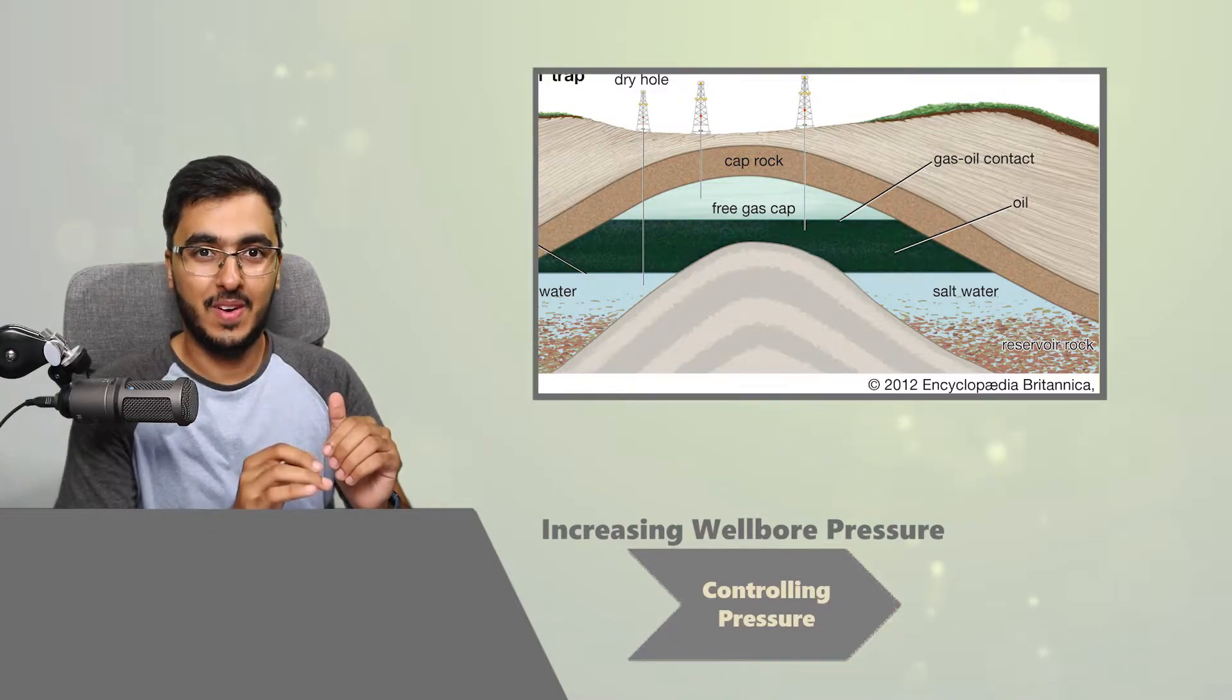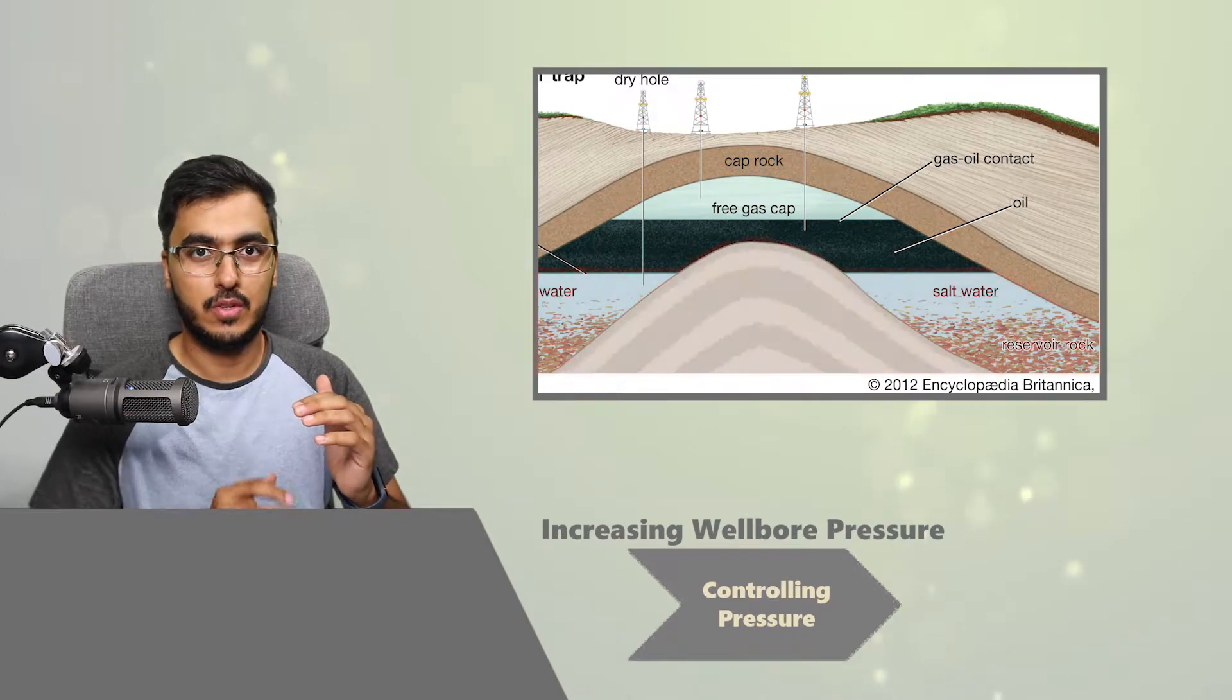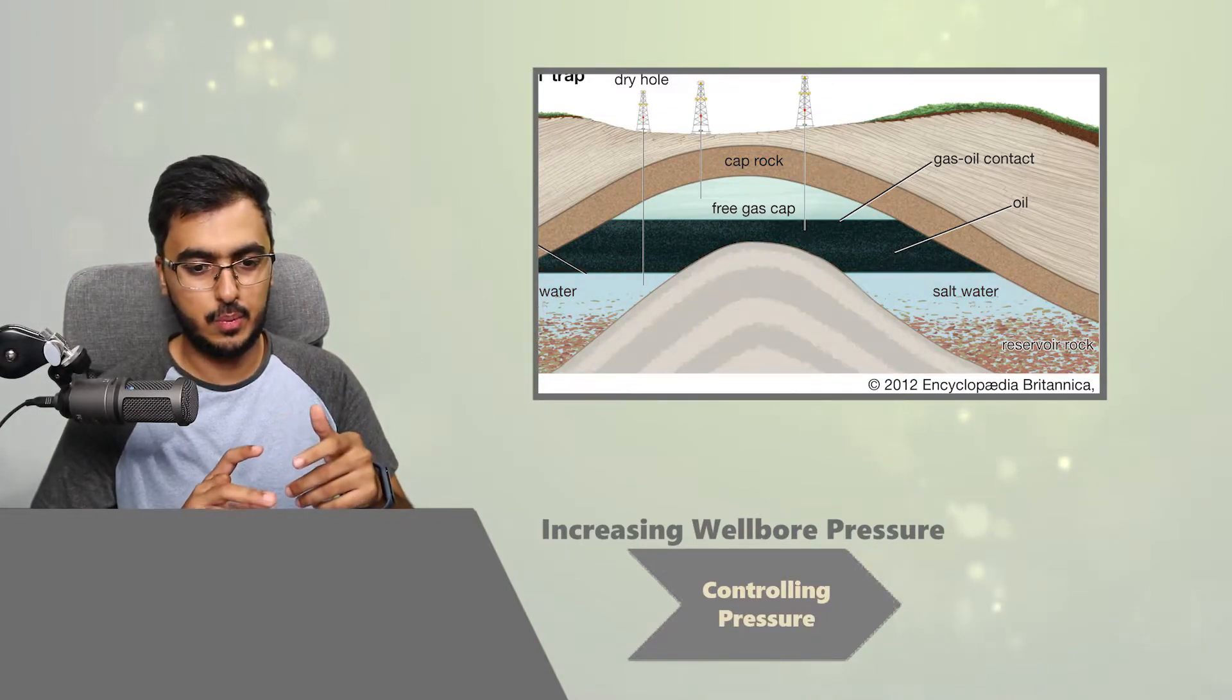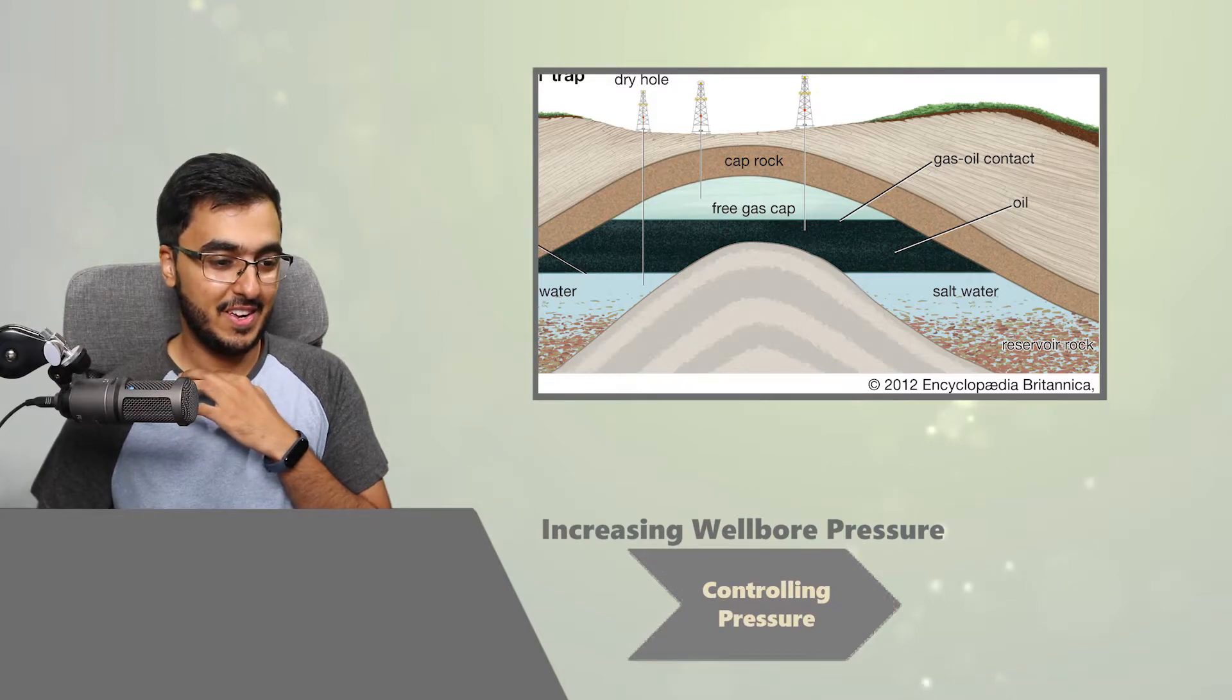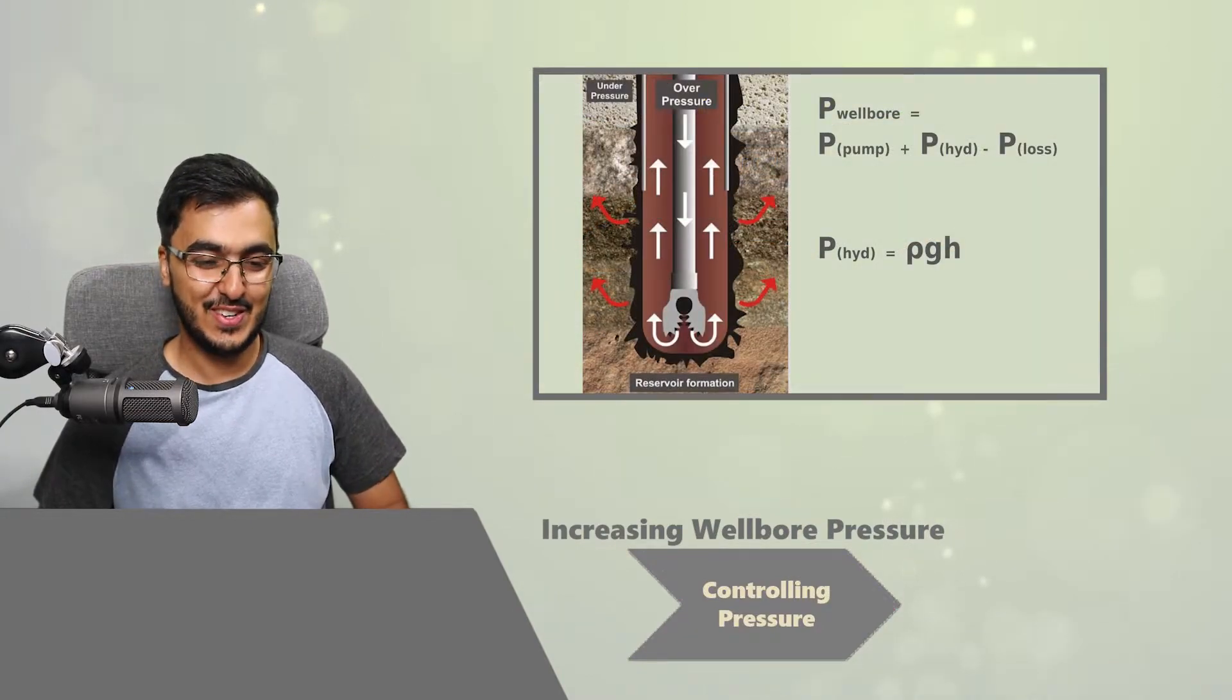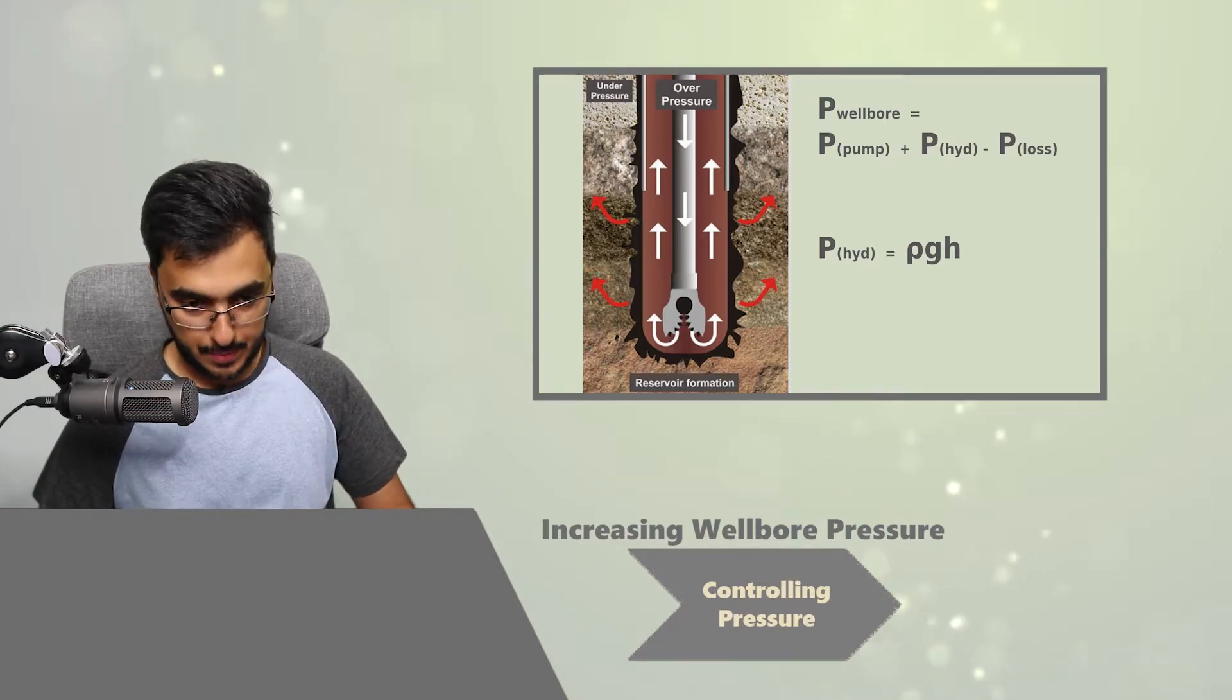Because changing the height, it does increase the wellbore pressure, but usually you have a target depth or target formation that you want to drill to. So if you kind of reached that point and then you want to increase the pressure, you can't increase the height or the depth in this case, because then you would go out of that formation. So you will be getting the pressure that you want but you won't be in the formation that you want, so you won't get any oil, which is not good for obvious reasons. You can also increase the pump pressure, so it's either increasing the density of the mud, increasing the depth which is not really practical as I said, or increasing the pressure of the pump.